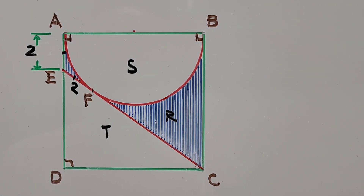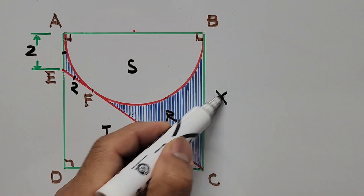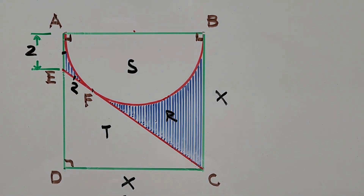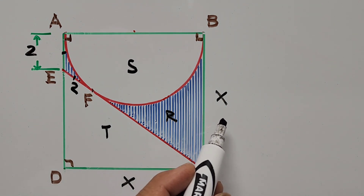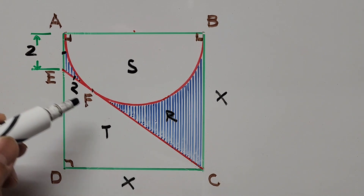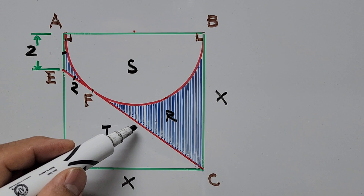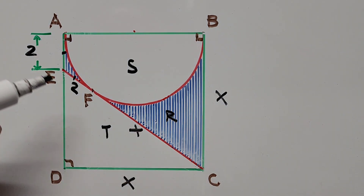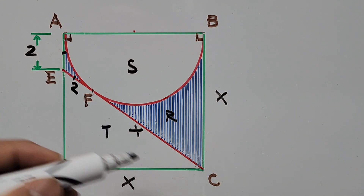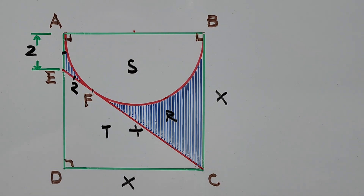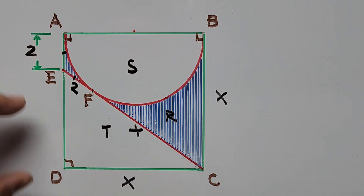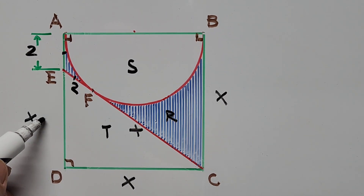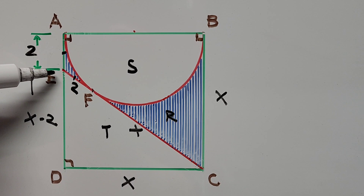Since we don't know the side of the square, we indicate it as x. So the bottom side is also x. By the two tangent theorem again, segment CF must equal x as well. Segment CE is the sum of EF plus CF, which gives us x plus 2. Since the total side is x, segment DE must be x minus 2, because there are two units accounted for by point E.